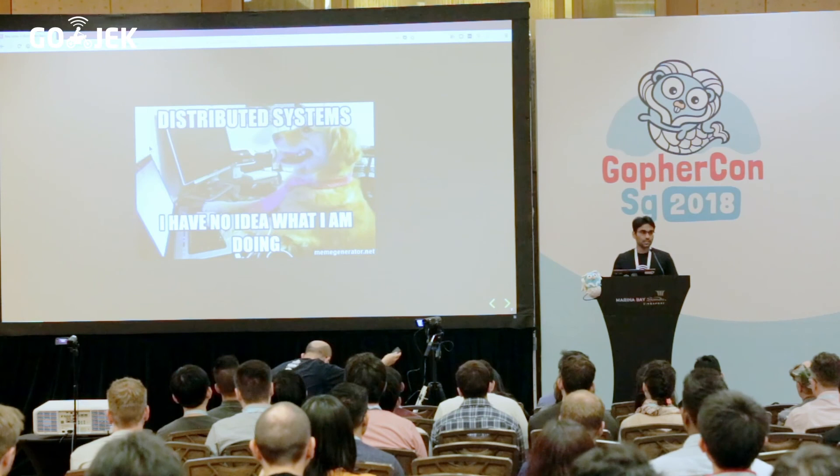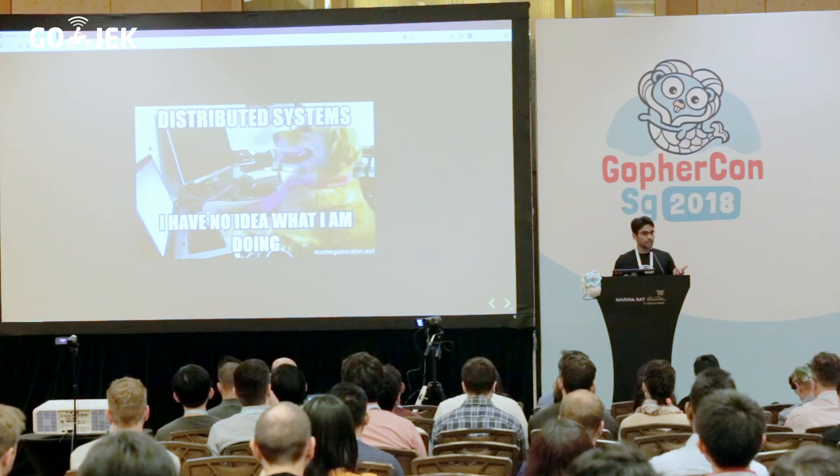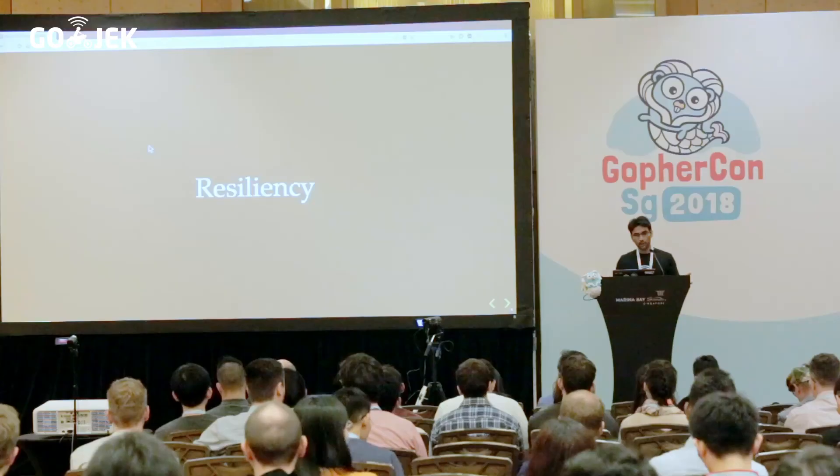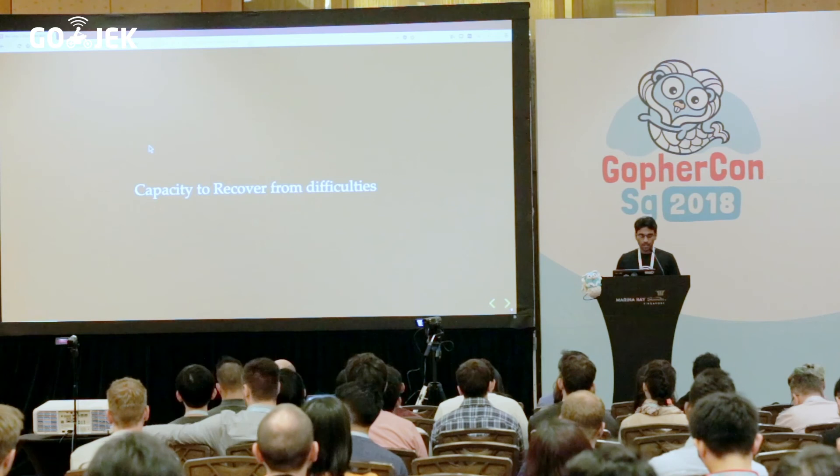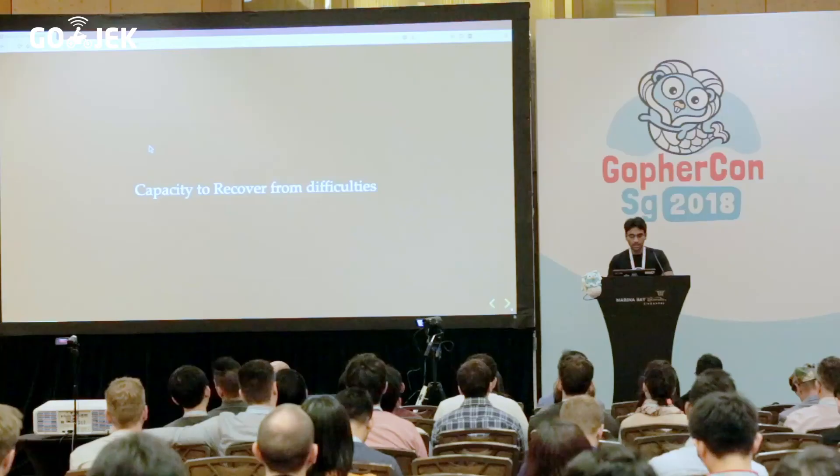For most of us it looks very complex, because it's too complex to reason about if you don't have proper discipline to know what is happening. So, what is resiliency? Resiliency is the capacity of a system to actually recover from difficulties. All through the talk, we will be discussing how we build resiliency and what are some of the patterns we learned along the way.